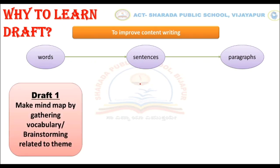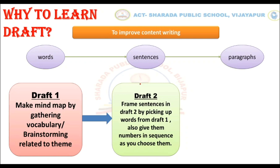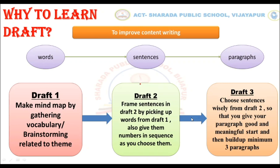In draft 1, we make a mind map by gathering vocabulary or brainstorming related to the theme. In draft 2, we frame sentences by picking up words from draft 1. In draft 3, we choose sentences wisely from draft 2 so that you give your paragraph a good and meaningful start, and then build up a minimum of 3 paragraphs.